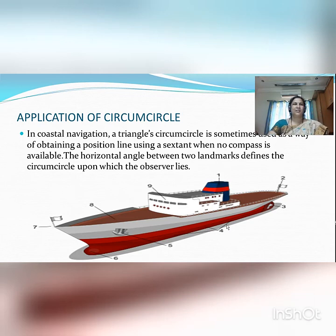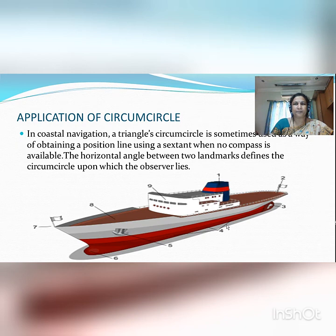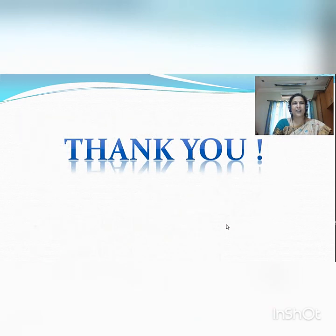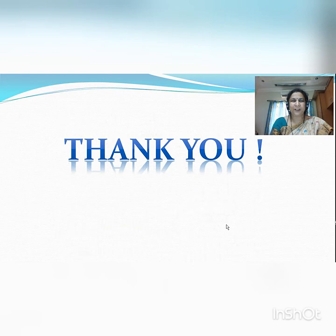This is the application of circumcircle. In coastal navigation, a triangle's circumcircle is sometimes used as a way of obtaining a position line using a sextant when no compass is available. The horizontal angle between two landmarks defines the circumcircle upon which the observer lies. This way we have studied the circumcircle of a triangle, which is our unit in 9th and 10th standard.